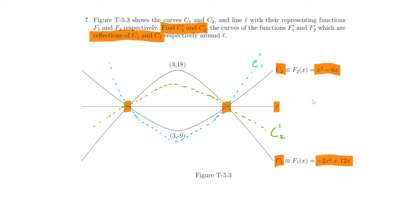So, we are taking x square minus 6x is equal to minus 2x square plus 12x and that gives us 3x square minus 18x is equal to 0 and that further gives us x into 3x minus 18 is equal to 0.